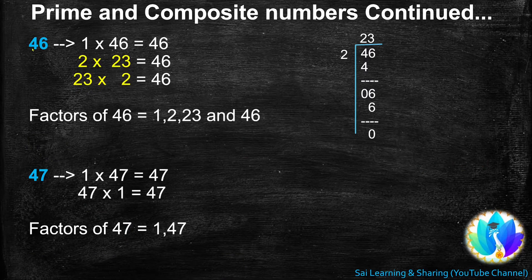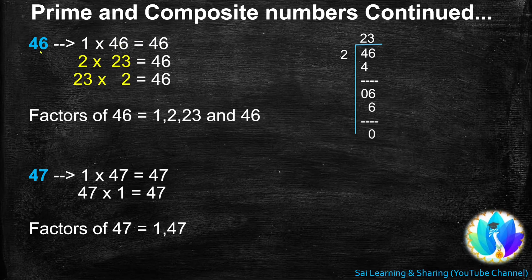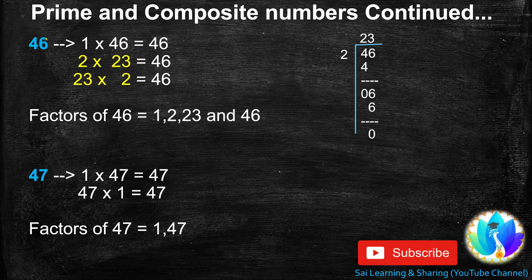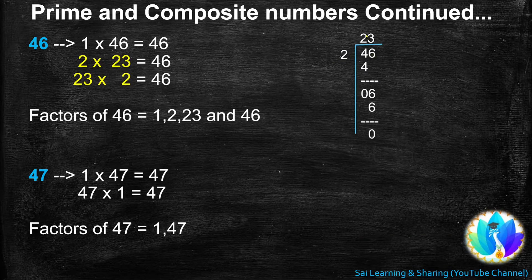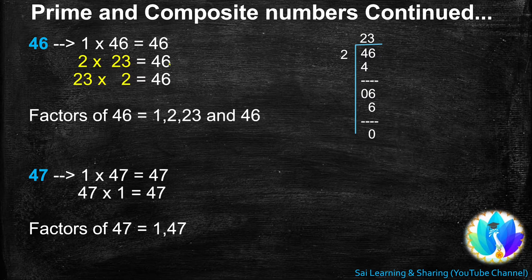Next, 46. 1 is a factor of every number, so 1s are 46, 46. 46 is a multiple of 2 because the digit in the 1s place is an even number. When we divide 46 by 2, we get quotient 23. 23 is another factor of 46. So, 2s are 23, 46.